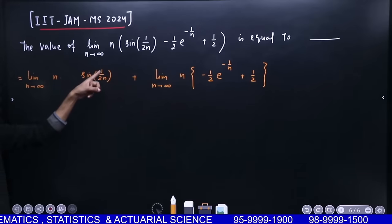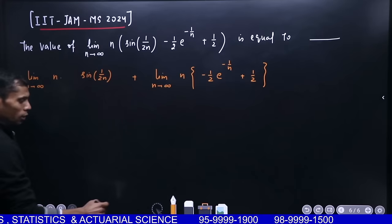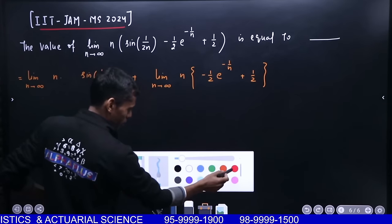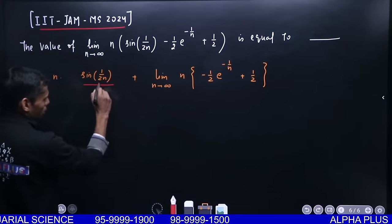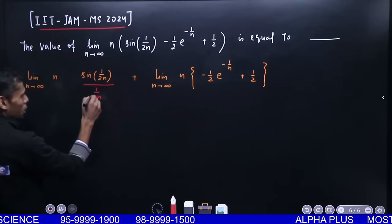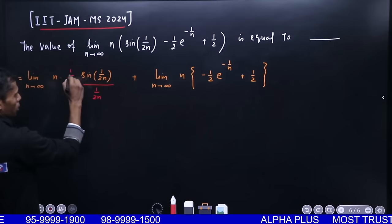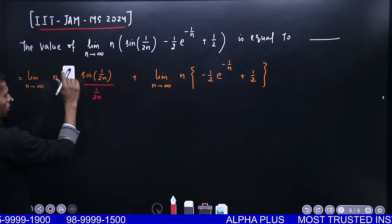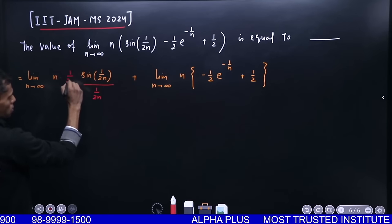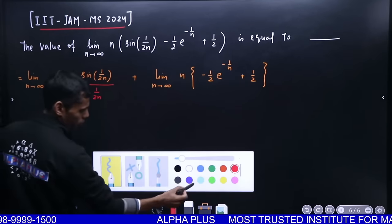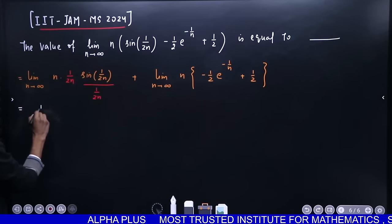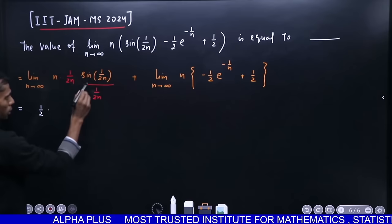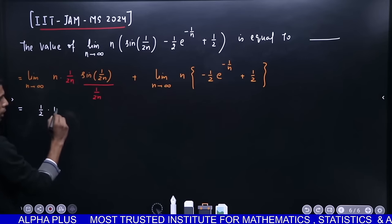As I explained to you, this is of the type sin(1/2n). So divide and multiply 1/2n. Angle match and angle 0. So if you have 1/2n, then you have to take 1/2n. Cancel it and you will get half into this limit, and this limit is 1. So this will be the first solution, which is 1/2.